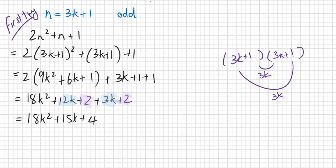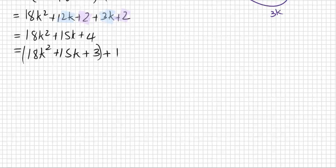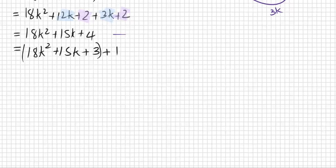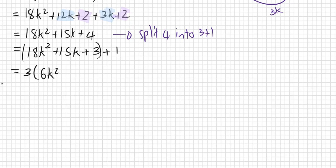So far we haven't proved anything. Now I'm going to take out 3 as a common factor. Before I do that, I'm going to split this 4 up into 3 and 1 so I can take out 3 as a common factor. So 18k² + 15k + 3 + 1. Now I can take out 3: 3(6k² + 5k + 1) + 1. Here's our proof again. This is not divisible by 3.